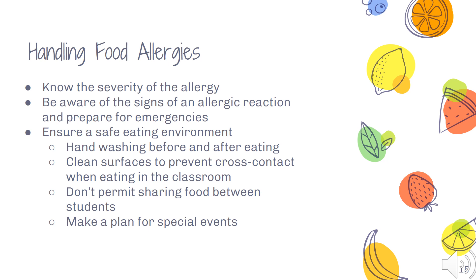Here are a few quick tips for handling food allergies. Know the severity of any child's allergies so that you can plan accordingly. Be aware of the signs of an allergic reaction and monitor kids while they're eating. Prepare for emergencies by having all the necessary supplies on hand. Ensure a safe eating environment, making sure anywhere food is prepared is clean, and encourage kids to hand wash before and after eating. Clean surfaces to prevent cross-contact, and don't allow kids to share food. Make a plan for special events and ensure any food brought in has ingredients clearly listed.